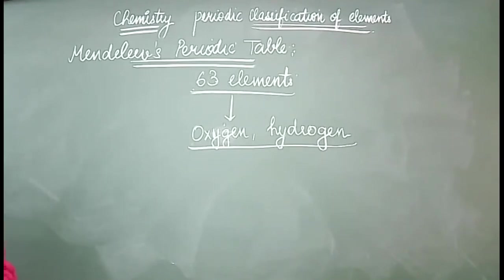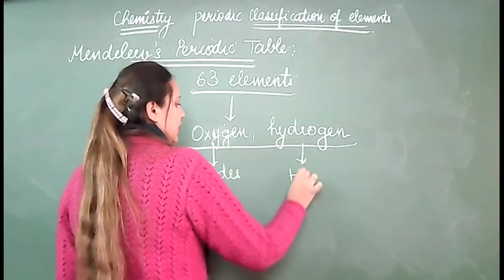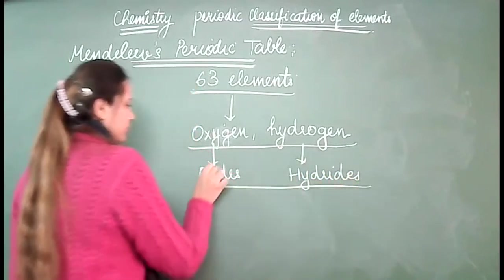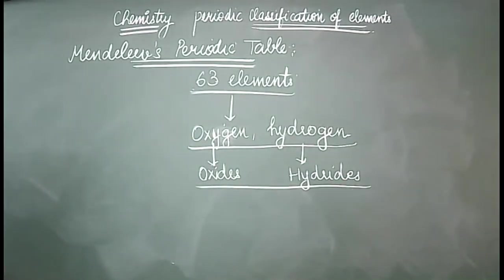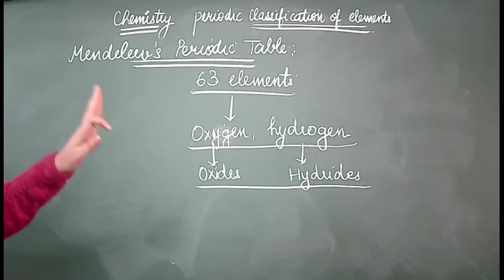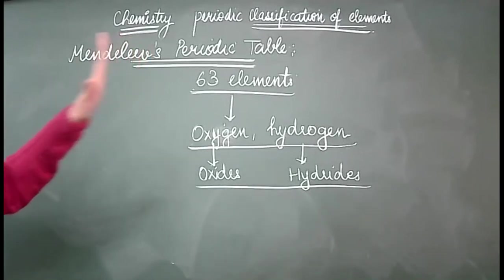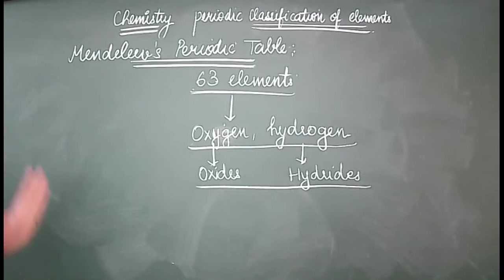What he did actually was search for the oxides and the hydrides. He was so curious about their order and arrangement that he pinned down all the properties of each and every single element — the behavior, physical and chemical properties. He started writing for each of these 63 elements, their properties and behavior, and pinned them on the wall.